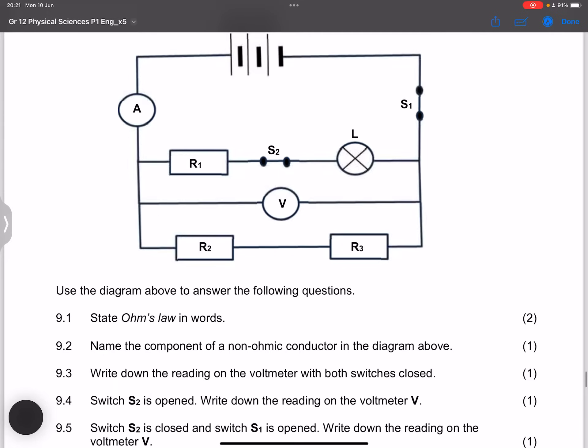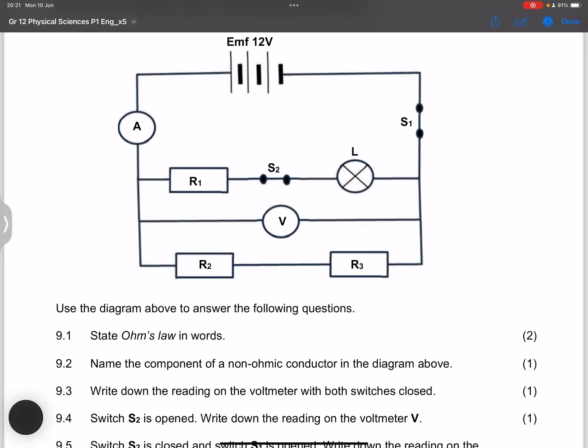They say name the component of a non-ohmic conductor in this diagram. Now remember that when we talk about a non-ohmic conductor, it is a conductor that obeys Ohm's law. If you look at any of these conductors where we would have a non-ohmic conductor, a light bulb, because remember the brighter it burns, it tends to generate heat and as a result it will actually deviate from Ohm's law. So we would say component L, which is a light bulb.